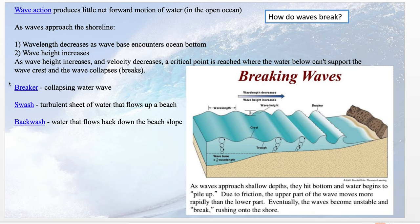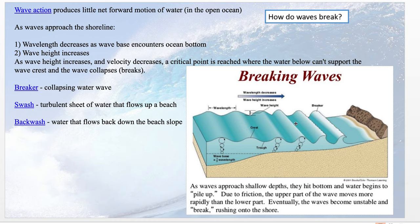A breaker is a type of wave that collapses — you see them with white foam approaching the sea. The swash is the energy of the wave going up the beach, and the backwash is the energy going back down. If this still isn't clear, you might want to pause the video, draw a sketch of how waves break, or watch a couple of videos online about how waves break and how they impact coasts.